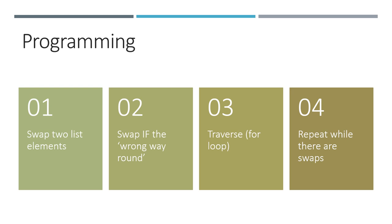So we're going to start by writing a very simple program that just swaps two elements of a list. Then we're going to put that inside an if block so that the swap only happens if the elements are the wrong way round.